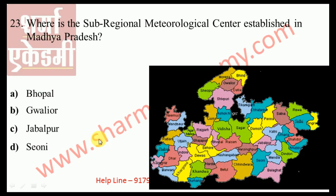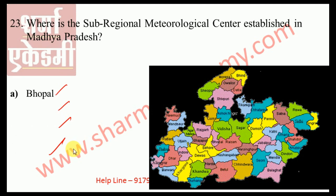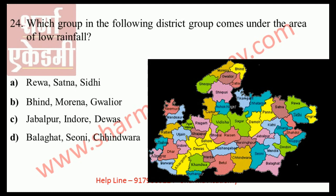Where is the sub-regional meteorological center established in Madhya Pradesh? Options: Bhopal, Gwalior, Jabalpur, Seoni. The correct answer is Bhopal, the capital of Madhya Pradesh. The meteorological center keeps all weather and climate records and has been set up by the Indian Meteorological Department in Bhopal, providing weather forecast information. Additionally, an office of the Indian Meteorological Department has also been established in Indore district.